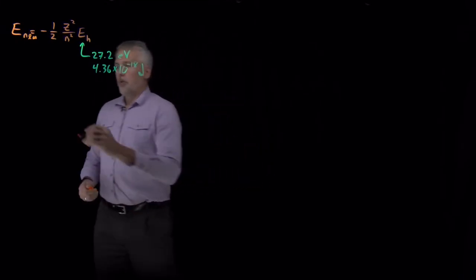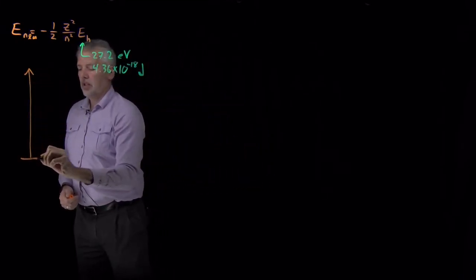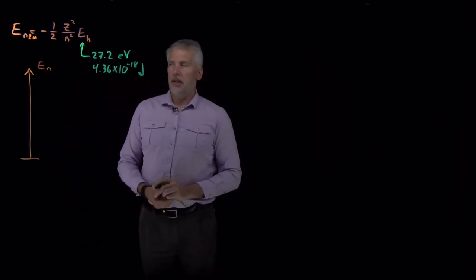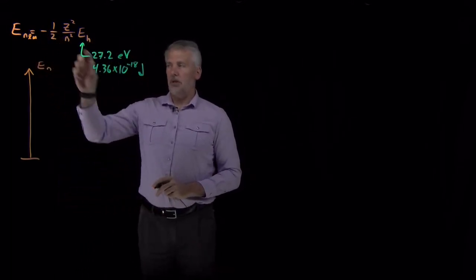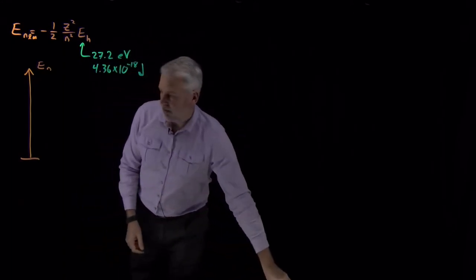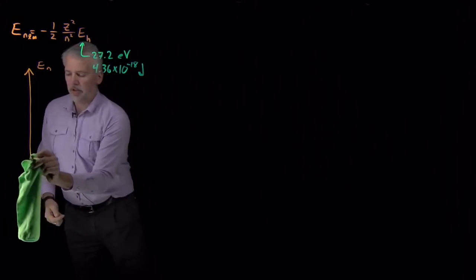So we can draw an energy ladder and ask ourselves what it looks like when the atoms have this energy of minus some constant times N squared. Let me put zero, since the energies are negative, up here.